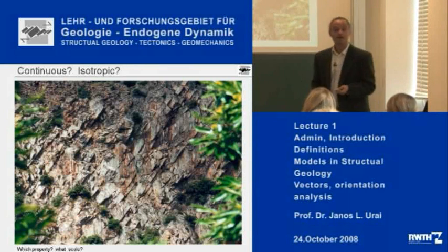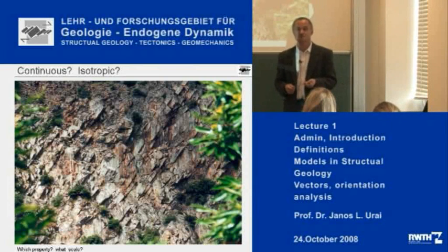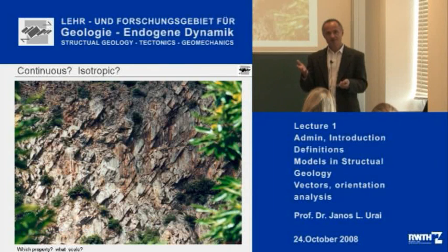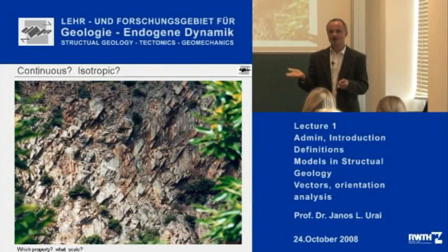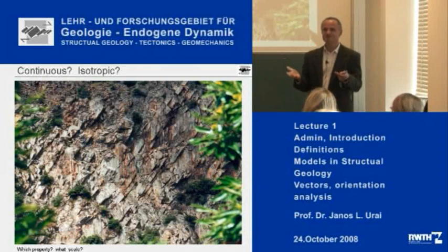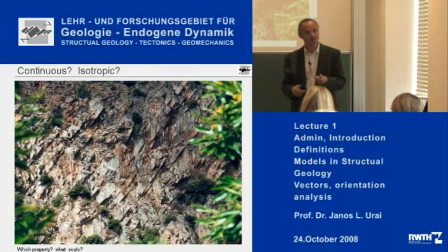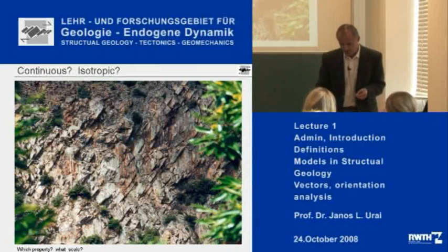Isotropic is another important word we'll come back to in the lectures. Isotropic means something that is the same in different directions — for example, an isotropic thermal conductivity means that heat will travel at the same velocity in every direction.